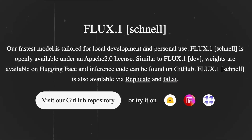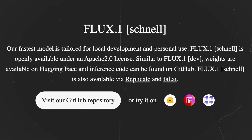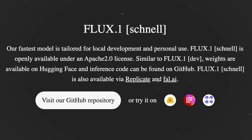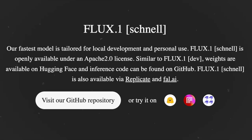Flux.1 Schnell is the fastest model, tailored for local development and personal use. It is openly available under an Apache 2.0 license. You can access it via Hugging Face, Replicate, and fal.ai.